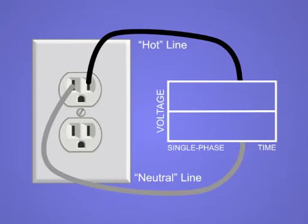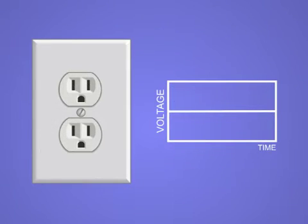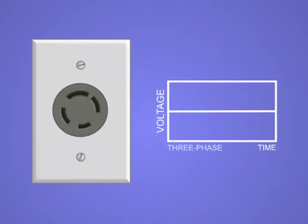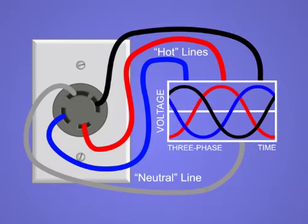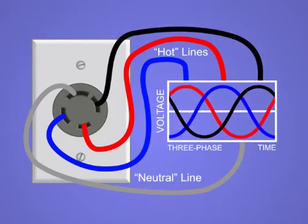Single-phase power has one hotline and one neutral line for carrying current and delivers 120 volts. Three-phase power delivers higher voltages via three hotlines, with AC voltage on each line equal in frequency and magnitude, and 120 degrees out of phase from one another.